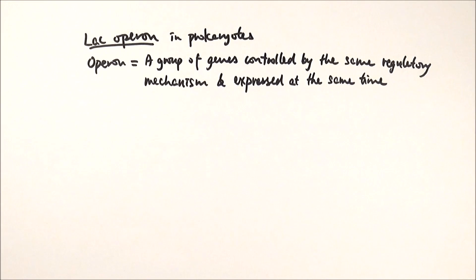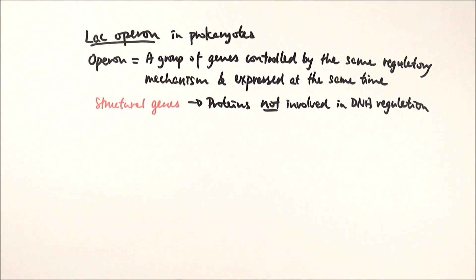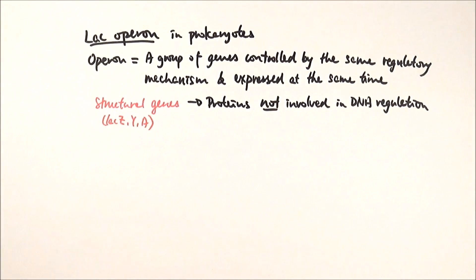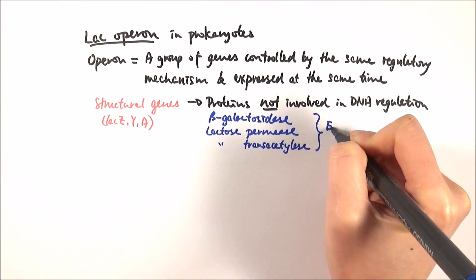Before we discuss how it works, you need to know the different components involved. Some of these terms can be used not only in LAC operon descriptions, but also in other situations involving gene interactions. First, we have structural genes — genes that code for proteins not involved in DNA regulation, meaning proteins or enzymes that carry out other biochemical functions. In the LAC operon, there are three structural genes: LAC-Z, LAC-Y, and LAC-A. They produce beta-galactosidase, lactose permease, and lactose transacetylase — the three enzymes that metabolize lactose.